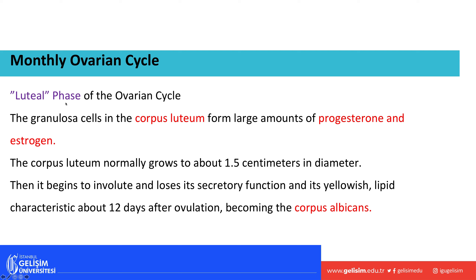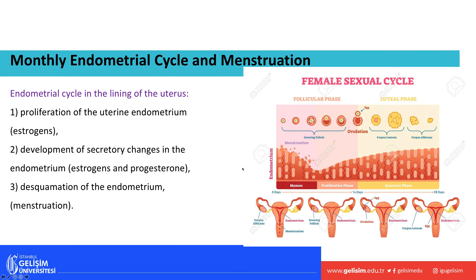During the luteal phase of the ovarian cycle, granulosa cells in the corpus luteum produce large amounts of progesterone and estrogen. The corpus luteum grows to about 1.5 cm in diameter, then caves in on itself, loses its function, and turns into scar tissue called the corpus albicans, around 12 days after ovulation.